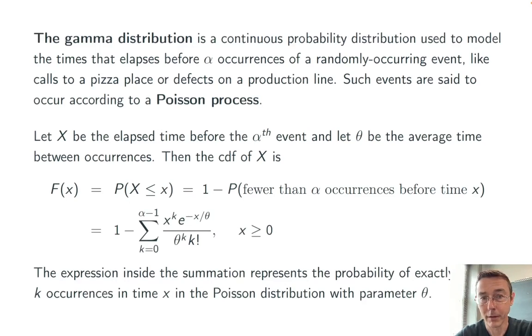That has a probability mass function given by the gobbledygook inside that summation formula. I have a whole video on the Poisson distribution, I'll throw a link up top. If you're not familiar with that, you really should start with that before diving into the gamma distribution.